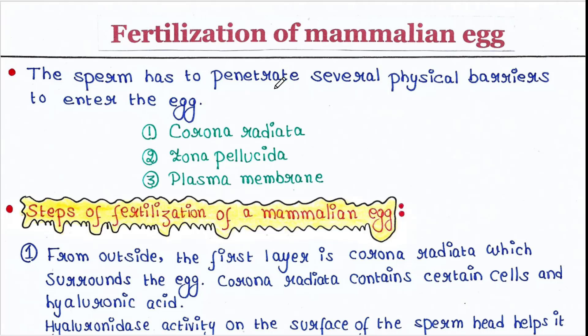The sperm has to penetrate several physical barriers to enter the egg. The egg has three physical barriers: first is corona radiata, then zona pellucida, and then plasma membrane.